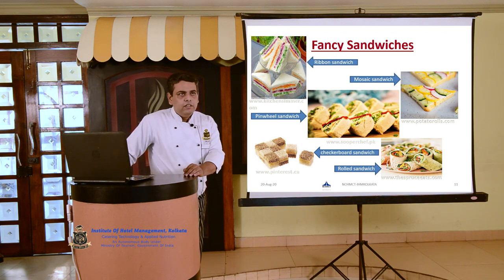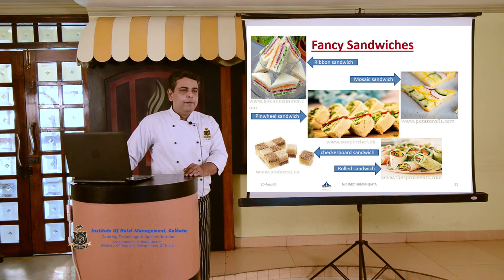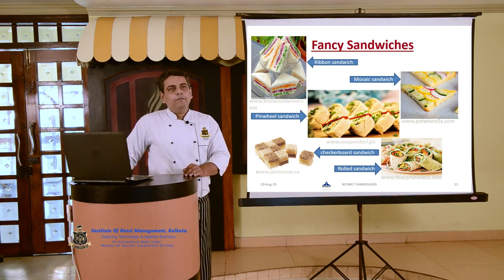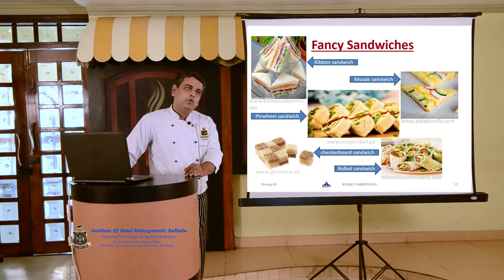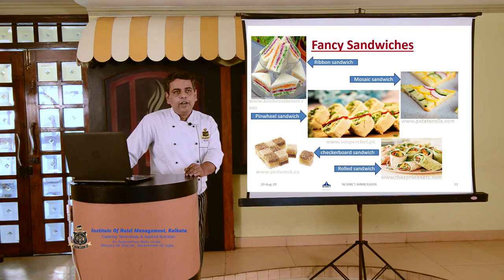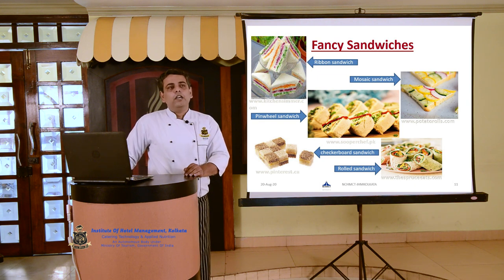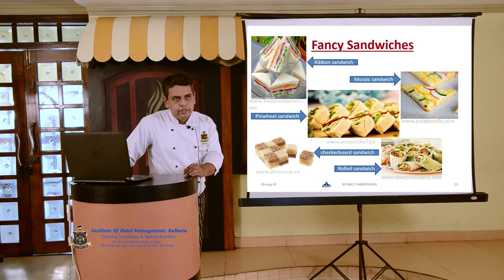The next fancy sandwich is checkerboard sandwich, a type made with many squares of alternate colored bread — brown or white. It is also served at the time of high tea. The last one is rolled sandwich. This kind of sandwich is prepared with large pieces of bread spread with butter and filled with the required filling, then rolled very tightly and wrapped with a clean wrap, kept for at least 1 hour inside the fridge so that it does not loosen while being served. It is served cold with the sides trimmed for better presentation.